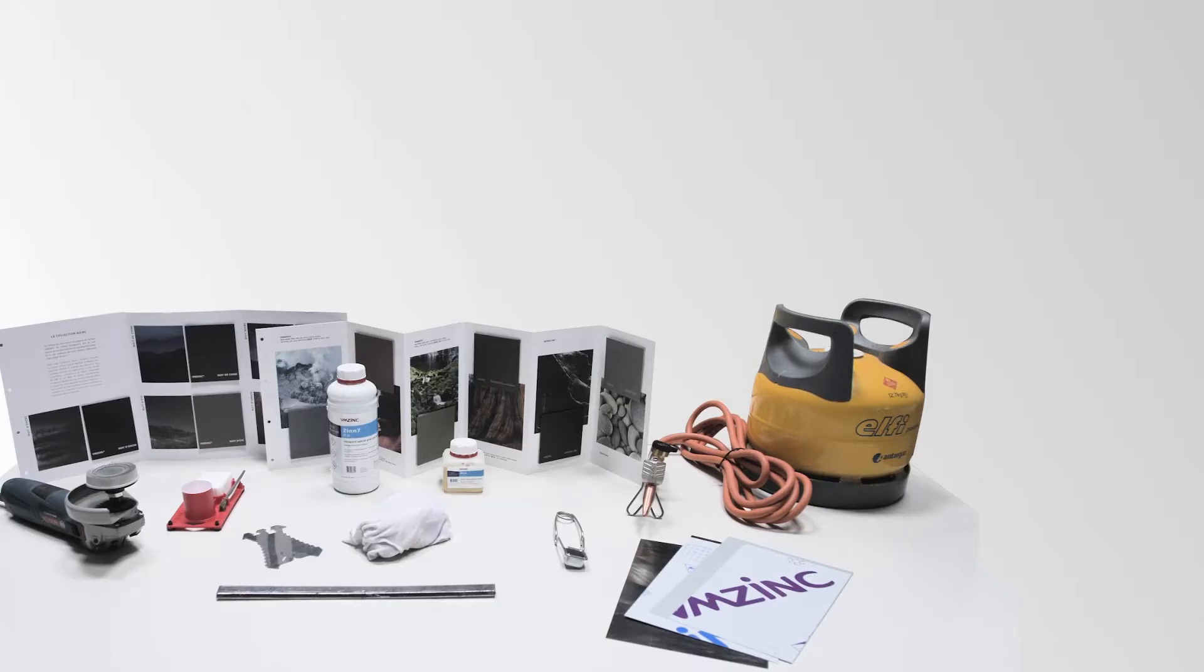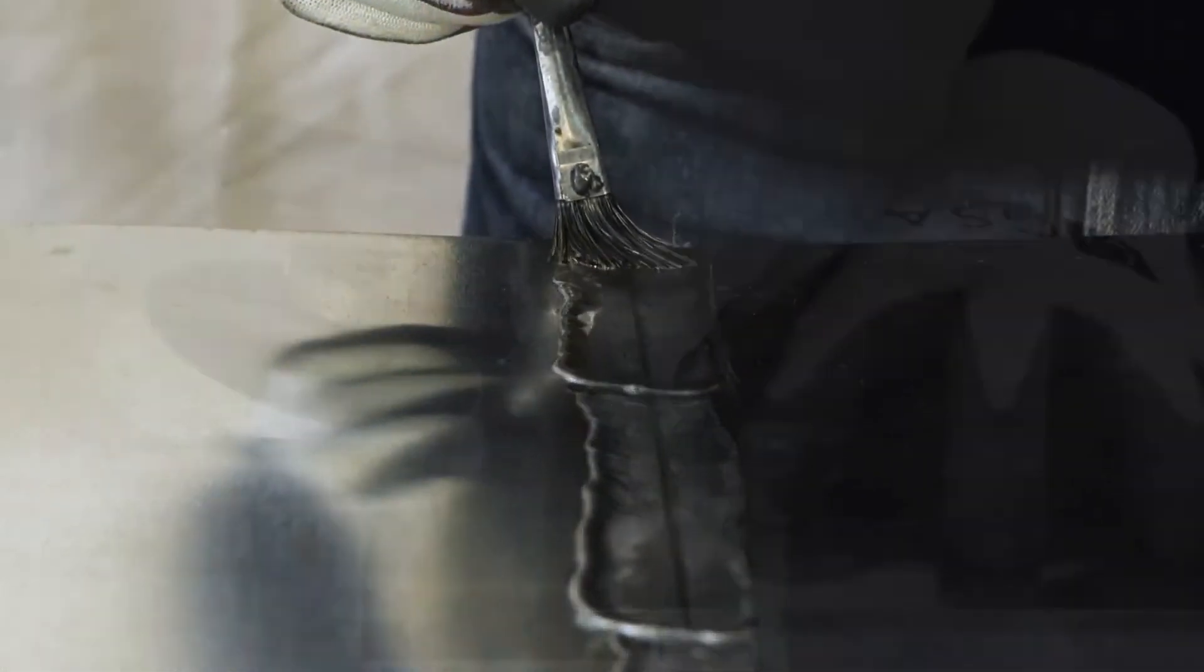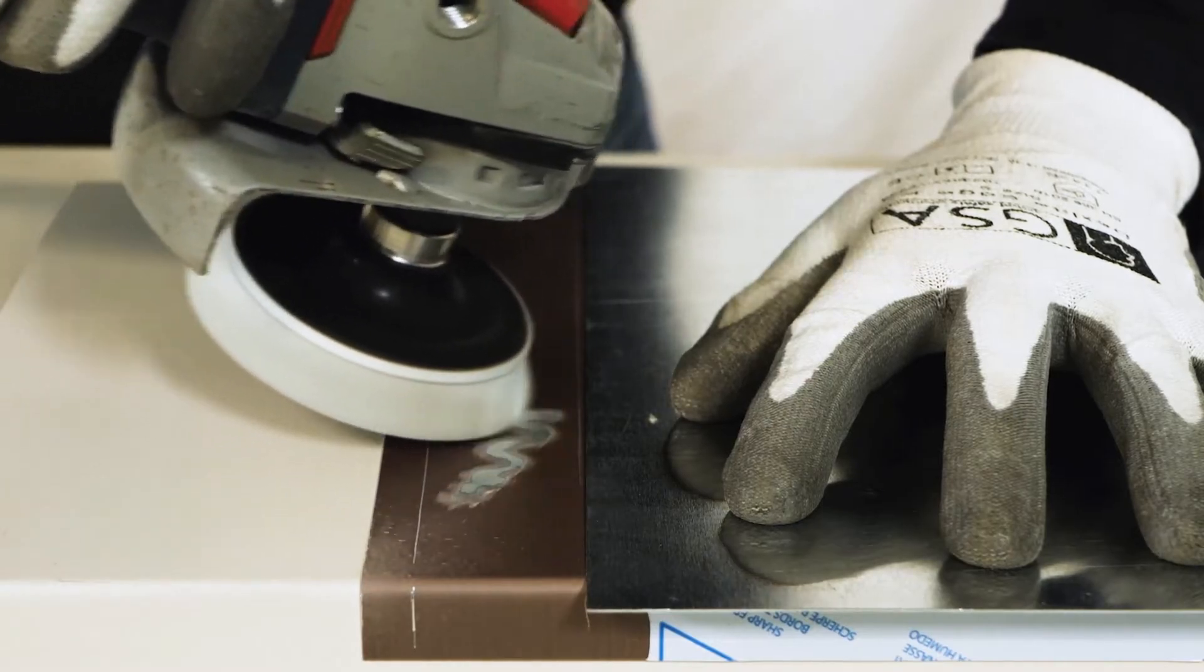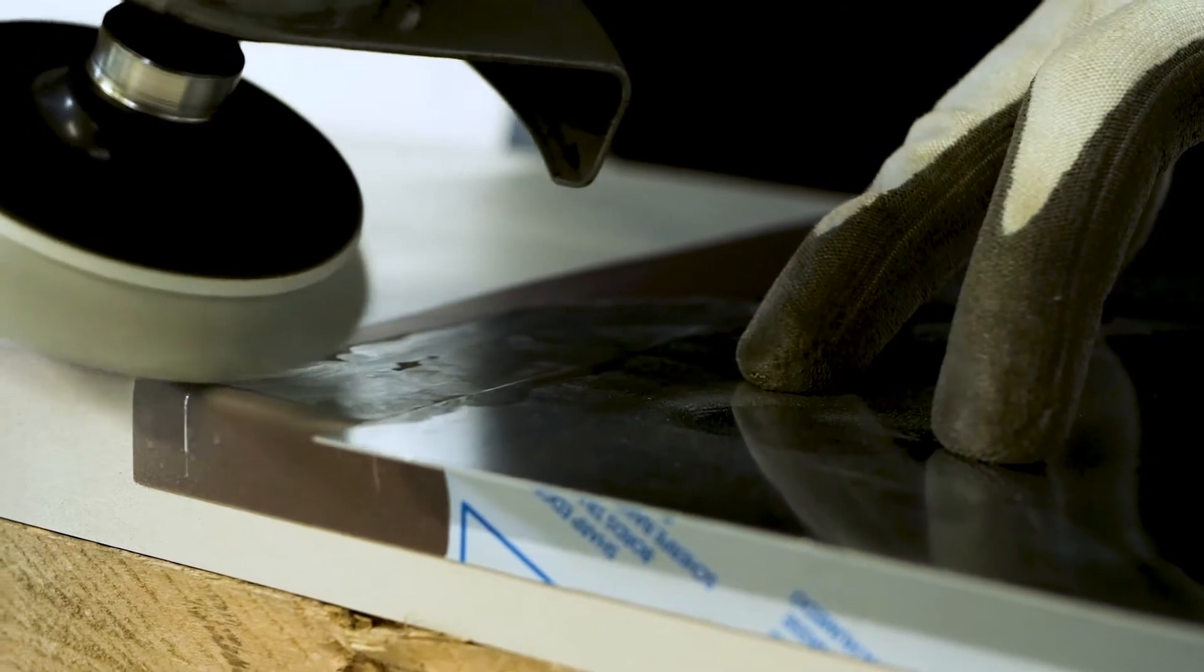For natural zinc and engraved azengar, ZIN 7 flux can be used to clean the surface. For all other finishes of zinc, including VM Zinc Plus, the surface can be stripped back to bare zinc using a grinder with a plastic bristle.